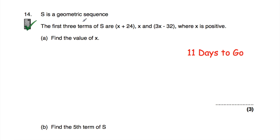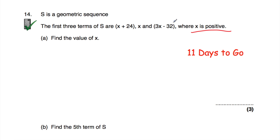Question number fourteen is on geometric sequences. The first three terms are (x plus 24), x, and (3x minus 32). In a geometric sequence, dividing consecutive terms gives the same ratio, so dividing the second term by the first equals dividing the third by the second. Write an equation using that, solve for x — and note that x is positive so choose the positive solution if there are two. We covered this 11 days ago. Once you find x, work out the sequence and find the fifth term.